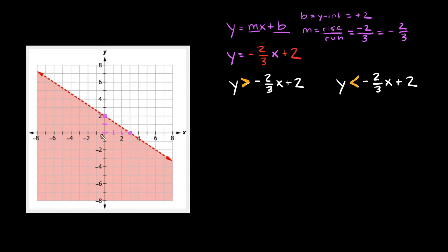You want to pick a point that's easy to evaluate, so normally that's going to be the origin right here at zero comma zero. So the point we're going to test is zero comma zero — zero is your x-coordinate and zero is your y-coordinate. We're going to plug in zero for x and zero for y.